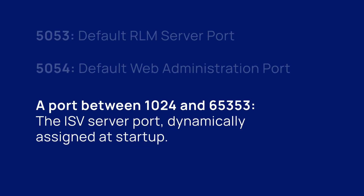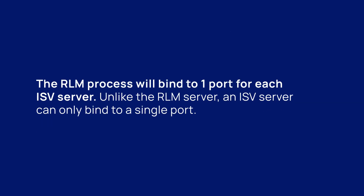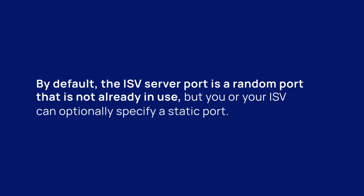Finally, there are the ISV server ports. Note that we use the term ISV when referring to a software provider. The RLM process will bind to one port for each ISV server. Unlike the RLM server, an ISV server can only bind to a single port. By default, the ISV server port is a random port that is not already in use, but you or your ISV can optionally specify a static port.